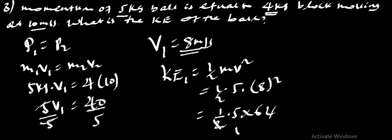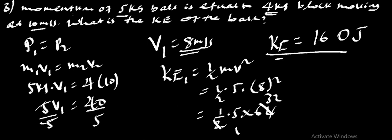This is equal to 1 over 2 times 5 times 64. By 2, 1 by 2, 32. Therefore, 2 times 5 is 10, 160 joules is equal to the kinetic energy of the ball.